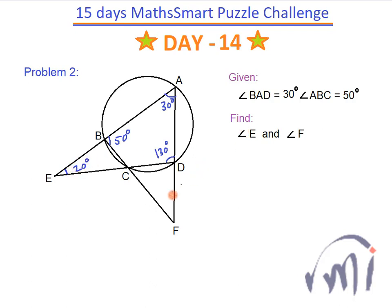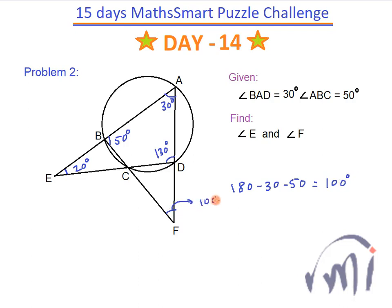So angle E will be equal to 20 degrees. For angle F, triangle ABF has angle A equal to 30 and angle B equal to 50. Then F will be equal to 180 minus 30 minus 50, that is 100 degrees.